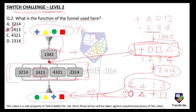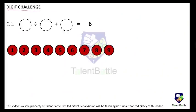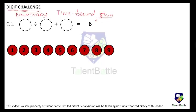The Digit Challenge tests basic numeracy. It is not difficult, but it is time-bound — they might give you 10 to 20 seconds per question, or a lump sum of 5 to 6 minutes to solve as many questions as possible. Based on your accuracy and the number of questions solved, you qualify for the next round.